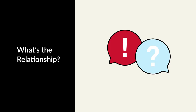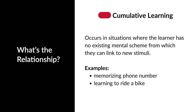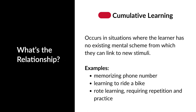So what's the relationship between the four types of learning and the acquisition process? First, cumulative learning occurs in situations where a learner has no existing mental scheme from which they can link to new stimuli. While this type of learning generally occurs during childhood, it may also occur in adulthood. Examples include memorizing a telephone number, learning to ride a bike, or any learning that is rote in nature and requires repetition and practice in order to build the initial mental structure.